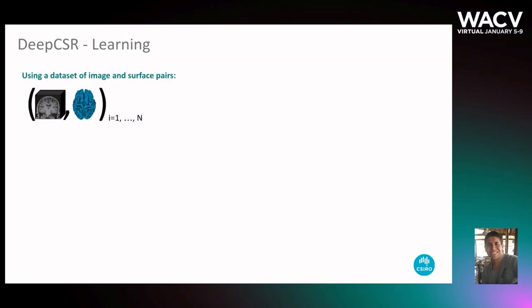From a dataset of pairs of MRI and target surfaces represented as triangular meshes and computed offline with traditional methods, we first compute an implicit representation of these surfaces by densely sampling points around them and computing an occupancy field or the signed distance function of these points in relation to the target surface.